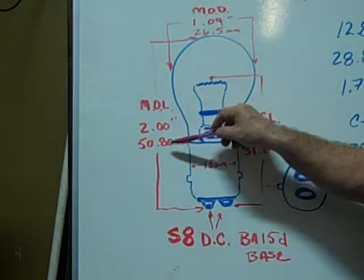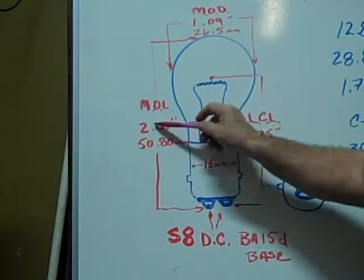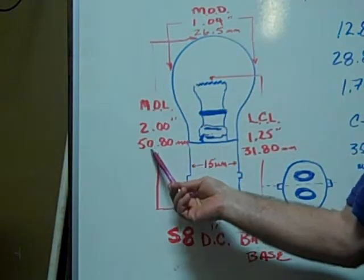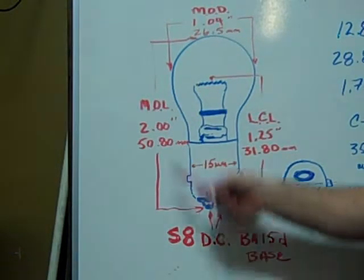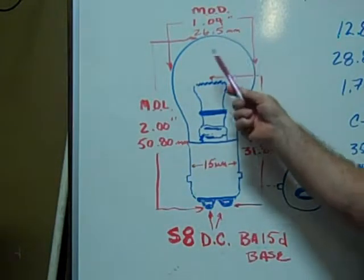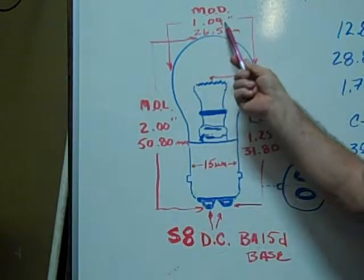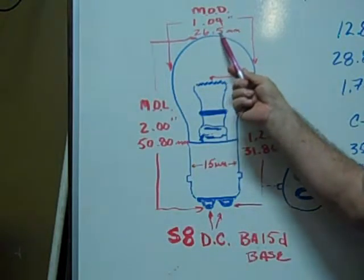The maximum overall length is 2 inches or 50.80 millimeters. The maximum outer diameter is 1.04 inches or 26.5 millimeters.